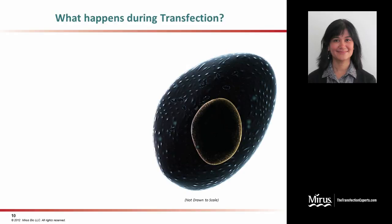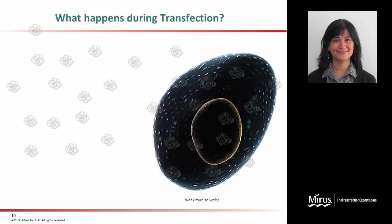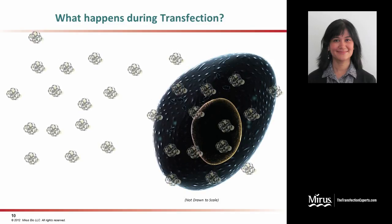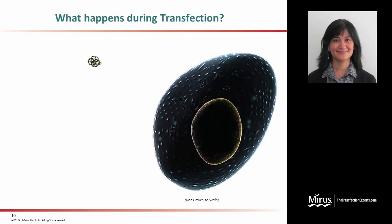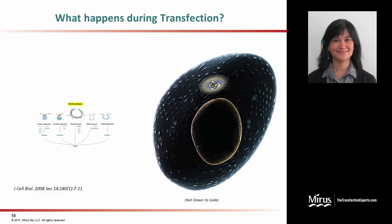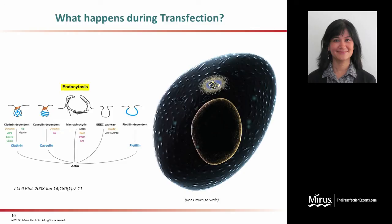Here is a simple animation that shows what happens during transfection. When you take your already formed transfection complexes and incubate them with the cells, some of these transfection complexes go and bind to the cell membrane. These bound transfection complexes are then taken up by the cell using a variety of endocytic pathways.